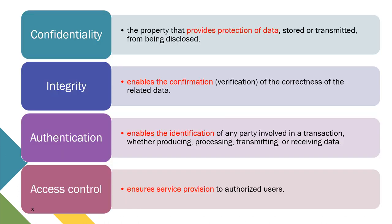When we talk about confidentiality of the system in IoT, it is the property which provides protection of data — meaning we want our data to be confidential. We don't want everyone to have access to our data. This confidentiality requirement is very important in order to protect our data, to store or transmit it without disclosing it to other parties.